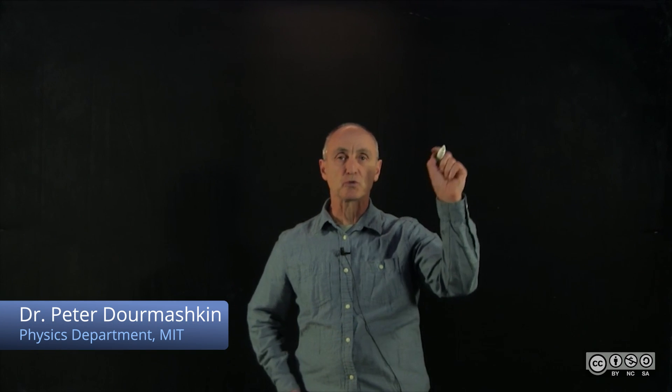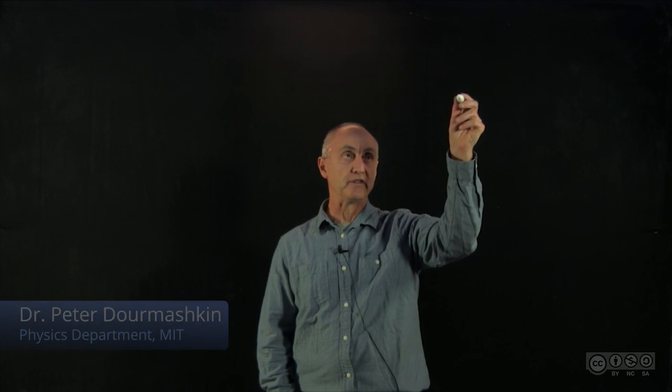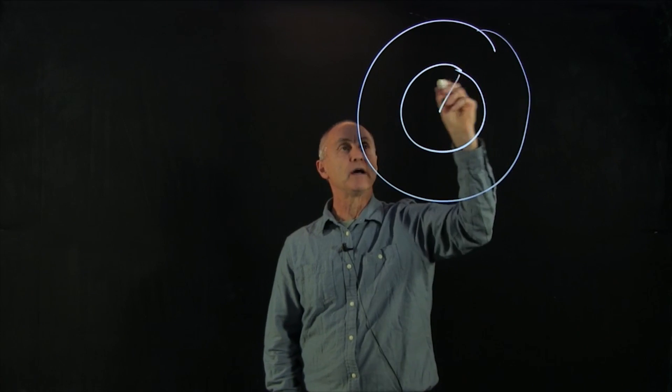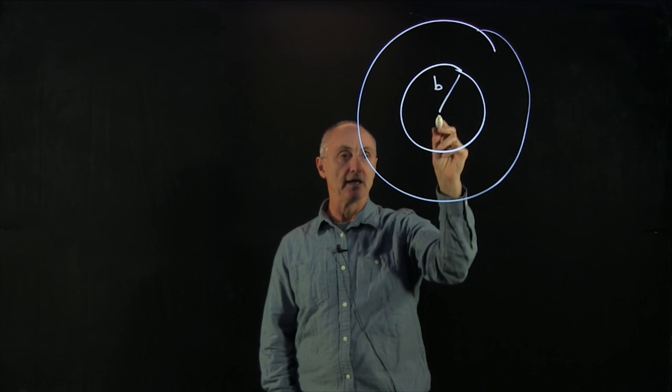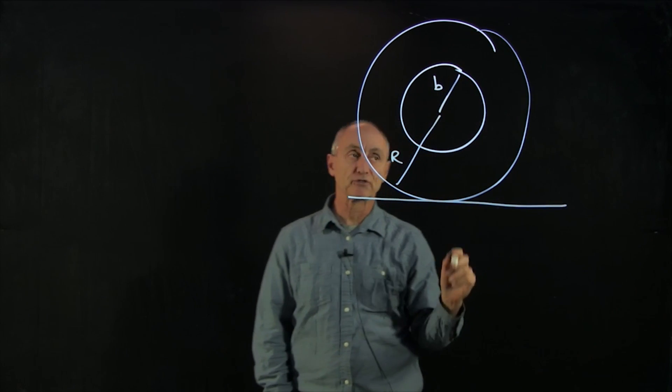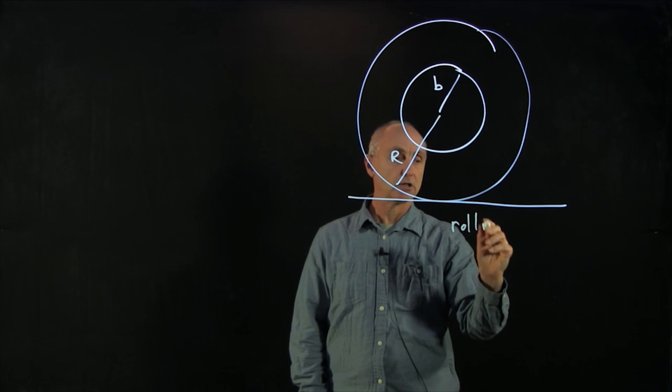I'd now like to consider a very unusual problem. And we saw a demo of this. Suppose you have a yo-yo. And the yo-yo has an inner radius b and an outer radius R. And the yo-yo is rolling without slipping along the ground.